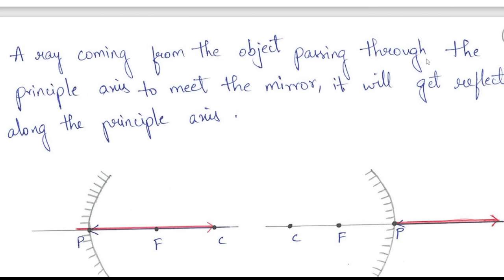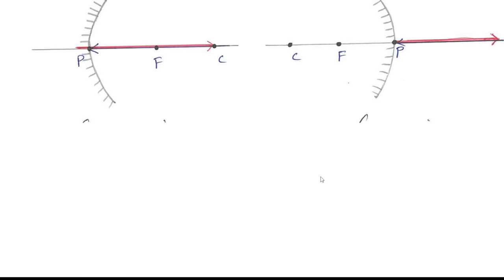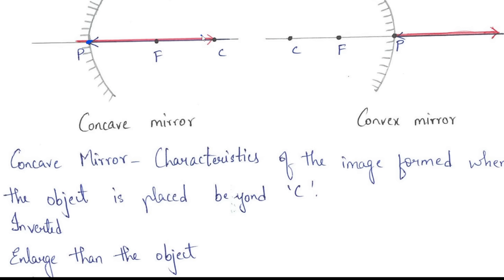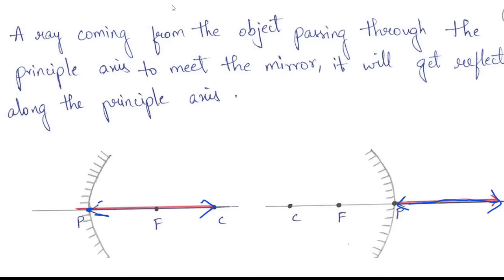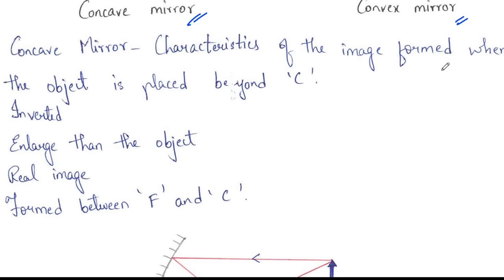Rule 4: A ray coming from the object passing along the principal axis to meet the mirror will get reflected along the principal axis. Whenever a ray is passing along the principal axis path, it retraces its own path. These are the four rules to draw ray diagrams for concave mirrors.